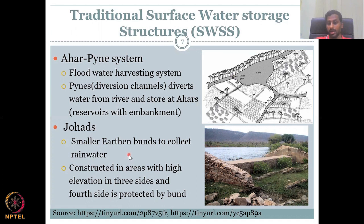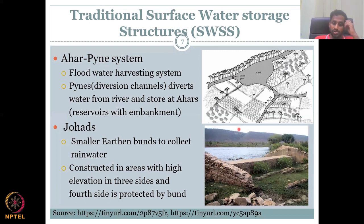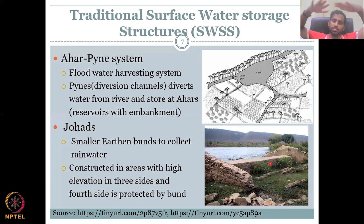Johars are another similar type — smaller earthen bunds to collect rainwater, not as large as the Ahar-Pine system. They are constructed in areas with high elevation on three sides, with the fourth side protected by a bund. If a village has no low-lying area, you find a spot where three elevations are high and the smallest height land is used as storage. You build a small earthen bund — made of mud and stone, not concrete — so it still allows some leakage and groundwater recharge. The bund stops water from the higher elevations and creates a pool for surface water storage.